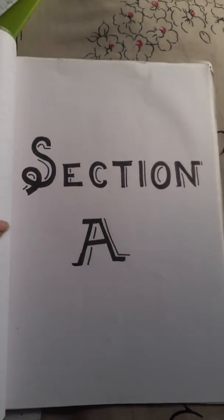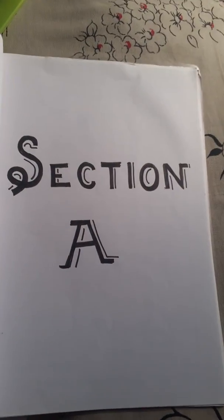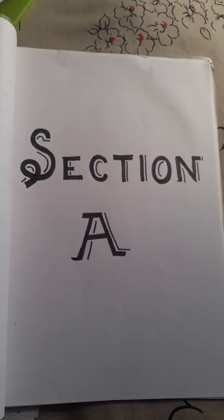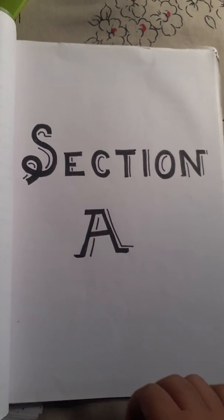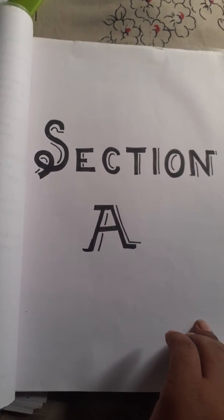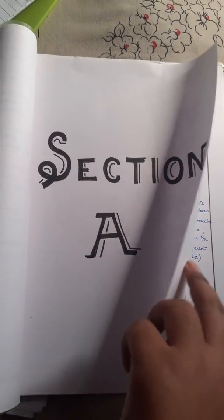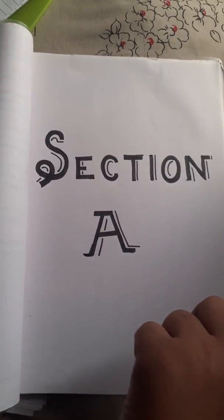So now I am getting my section A started. For a bold look, I have given the heading section A and I have made it bold. You can use many other colors also for this, but I think black and white suits the most, so I have done it with black.